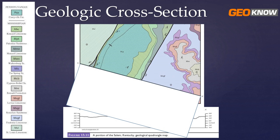In the geologic world, think about this line A to A prime as where you're going to cut the cake. We're going to take a big knife and cut along this line and then see that vertical surface — see what's underneath the ground. The best way I've found to do this is to take a piece of paper and place it along that line A to A prime. Every time you go along that line and find a change in rocks, which you'll see by the change in color, we have a geologic column that tells us a little bit about the rocks on this map.